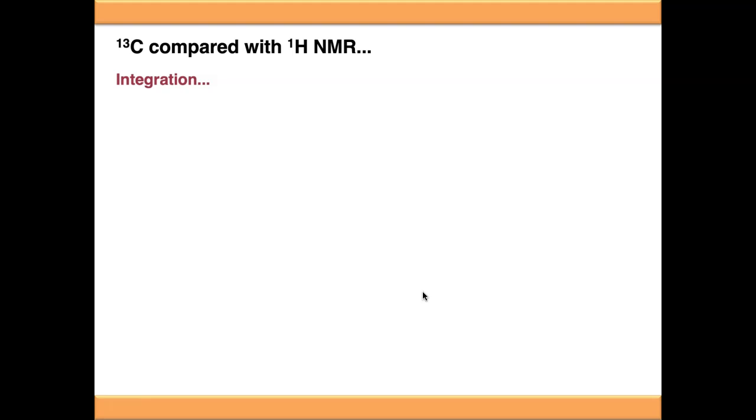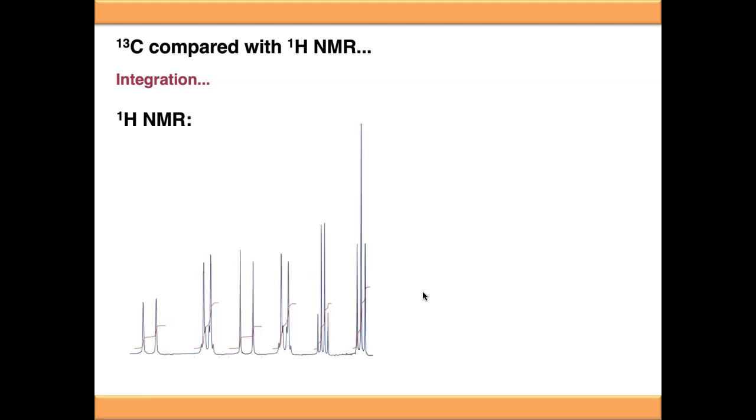I mentioned there's no integrated trace on the carbon-13 spectrum. We're used to seeing the integrated trace on proton NMR spectra like this. We discussed in the video on integration that the ratio of the integrals of all these signals gives us the ratio of the proton nuclei that went into making them. So in this case, we can say this is a 1 to 2 to 1 to 2 to 2 to 3 integration ratio, or it could be 2 to 4 to 2 to 4 to 6, and so on—any compound ratio of those numbers.